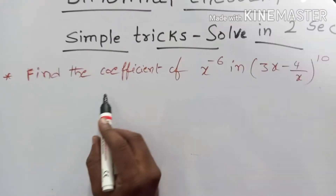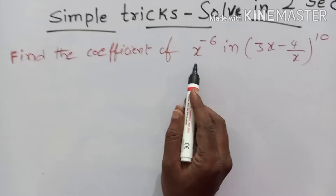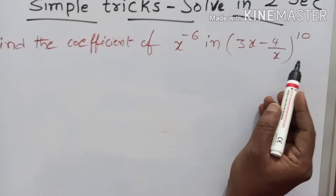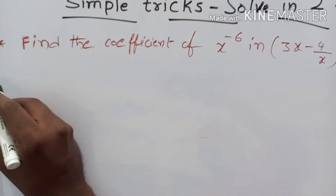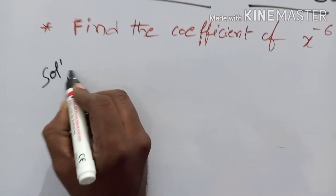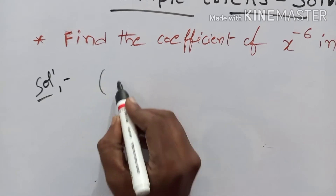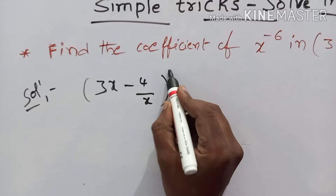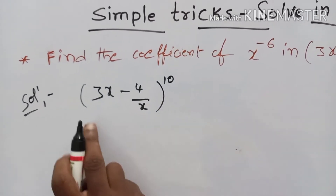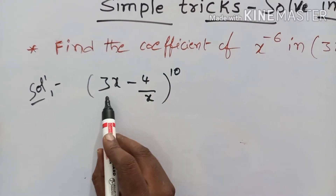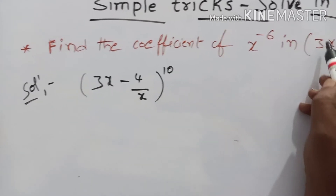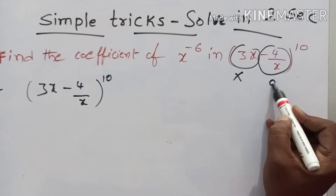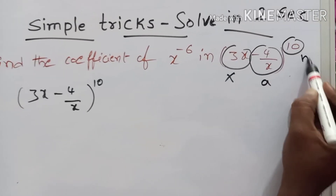Let us start now. Find the coefficient of x power minus 6 in (3x minus 4 by x) whole power 10. Given expansion is (3x minus 4 by x) whole power 10. Comparing with (X plus a) whole power 10: capital X value is 3x, small a value is minus 4 by x, and n value is 10.